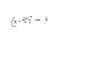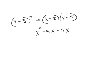We're going to look at something like this: the quantity x minus 5, squared. That equals x minus 5 times x minus 5, because it's squared. Using the FOIL method: first terms give x squared; outside gives x times negative 5; inside gives x times negative 5; and last gives negative 5 times negative 5, which is positive 25. Adding those together gives x squared minus 10x plus 25.